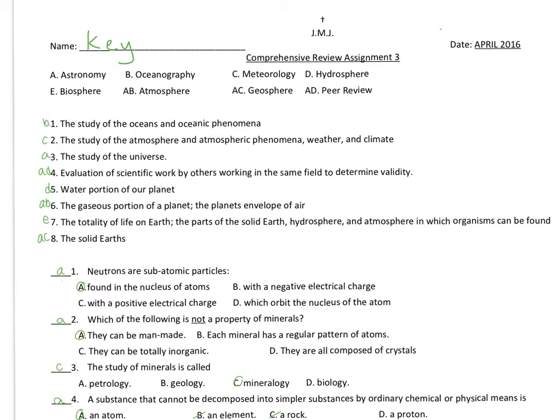Evaluation of scientific work by others working in the same field to determine validity is peer review. Asking your peers, others that are working in that field, to look at your stuff. Peer review, too easy. The water portion of our planet is the hydrosphere. Remember that the hydrosphere can be the oceans, lakes, rivers, even glacial ice, all part of the hydrosphere.